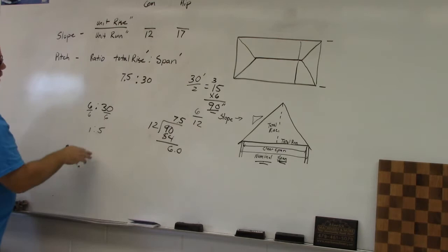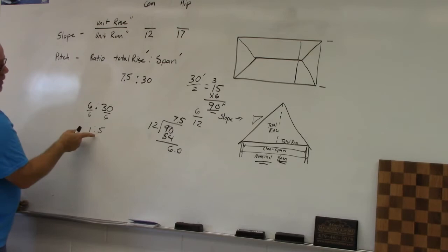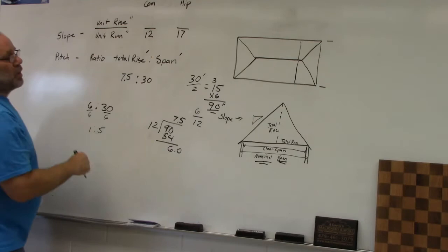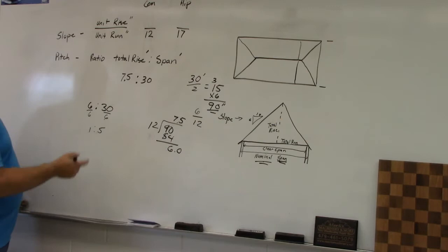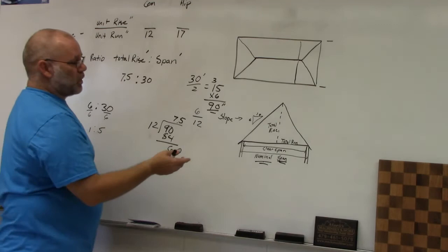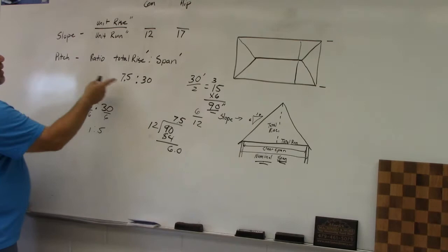So pitch is a ratio between the total rise and the span, and it can be reduced — for example, 1 to 5. Slope, on the other hand, is indicated by the diamond symbol showing, say, 6 over 12. That is the difference between slope and pitch. When people say 'it's a 6,' the 6 is the slope, not the pitch — they are not interchangeable.